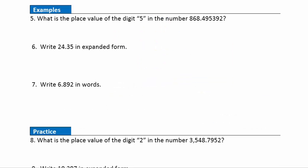Now let's look at some examples to help you identify decimal place values. Question five: what is the place value of the digit five in this number? Here's my digit five. From the ones place, going to the right: tenths, hundredths, thousandths. So that is in the thousandths place. We want to make sure we have a THS on that — it indicates that that's a fraction, five out of a thousand.